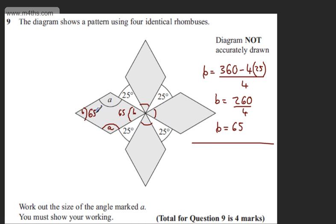If I add these two and subtract from 360, that leaves these two angles. So A will be equal to 360 degrees minus two lots of 65, which is 130, divided by two.